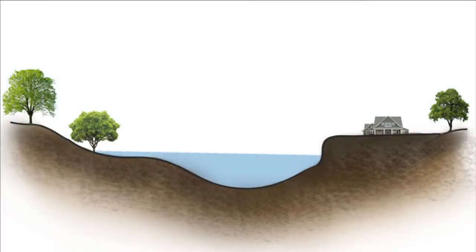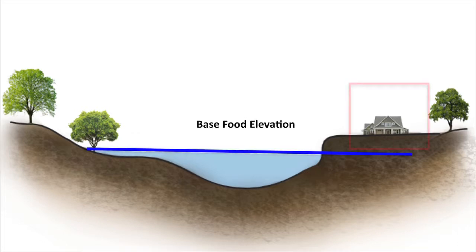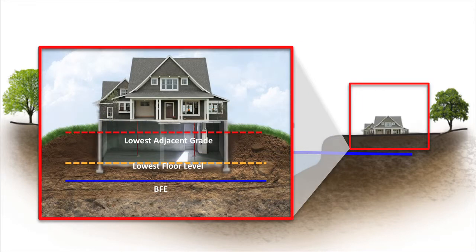The Letter of Map Revision Based on Fill, or LOMR-F, is appropriate when a structure or property has been elevated above the base flood elevation as a result of the proper placement and compaction of fill. For buildings, it must be shown that the lowest adjacent grade and the lowest floor, including the basement, is at or above the base flood elevation.